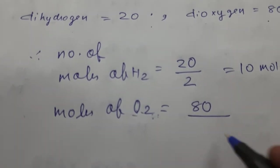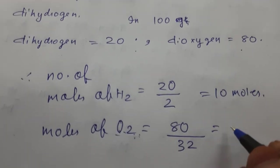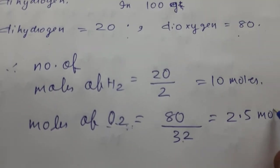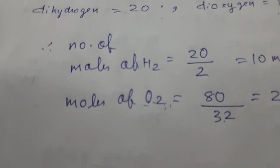Dioxygen's molecular mass is 32. Atomic mass of one oxygen is 16, so for 2 it's 32. So when you divide 80 by 32, you get 2.5 moles. Number of moles we have got.